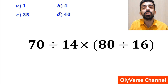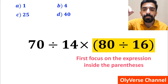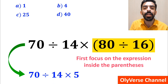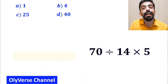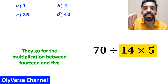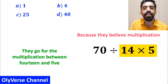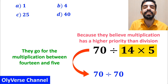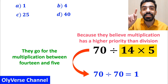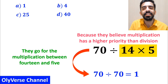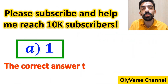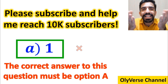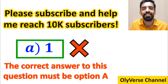Many people, when starting to solve this question, first focus on the parenthesis and rewrite the expression as 70 divided by 14 multiplied by 5. Then they go for the multiplication between 14 and 5, believing multiplication has higher priority than division. They simplify this to 70 divided by 70, which gives them the answer 1, and conclude that the correct answer must be option A. But that's not correct — we've been tricked.